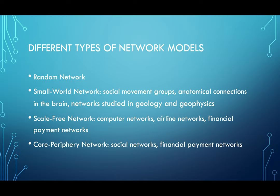The other three network structures are more heterogeneous, meaning each node might have a relatively different number of neighboring nodes depending on its role in the network. Some heterogeneous network structures we frequently see in real life: one is the small-world network, observed in social movement groups, anatomical connections in the brain, and in geology and geophysics. We also see the scale-free network, frequently observed in computer networks, airline networks, and financial payment networks. The last one is the core-periphery network, often observed in social networks and financial payment networks.